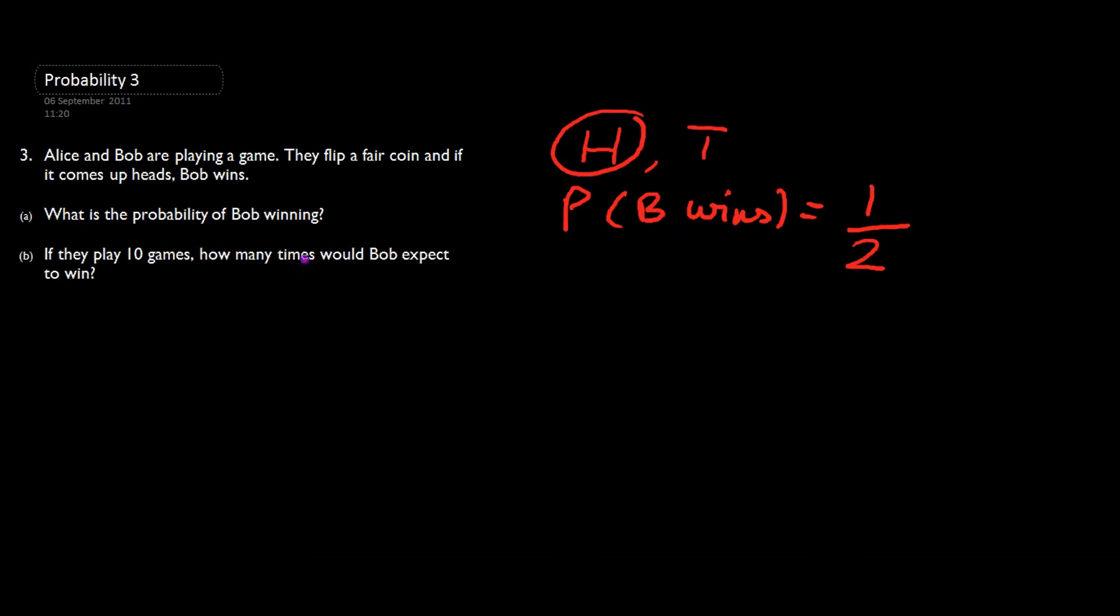Now part b: if they play 10 games, how many times would we expect Bob to win? Well, this probability says he'll win half the games, so if there are 10 games all together, we'd expect Bob to win one-half times ten games, which equals five. And this is called our expectation. In this case, the expectation is on average a half, so half the time. If they play 10 games, half of 10 gives you five.